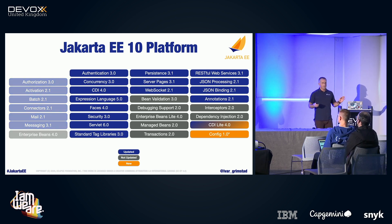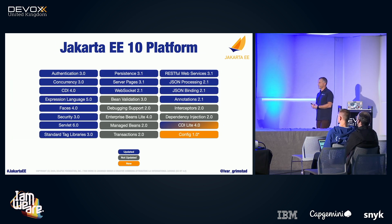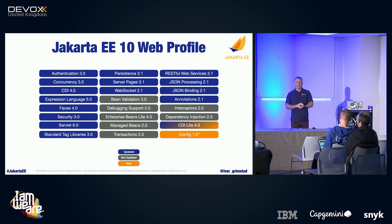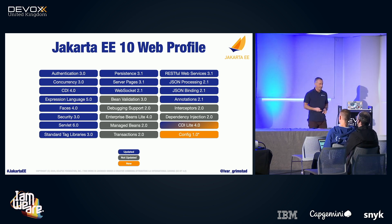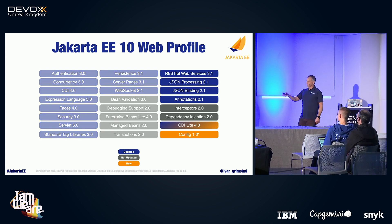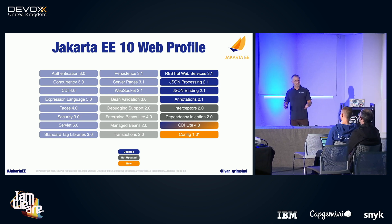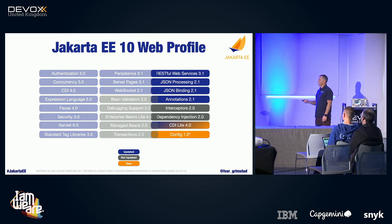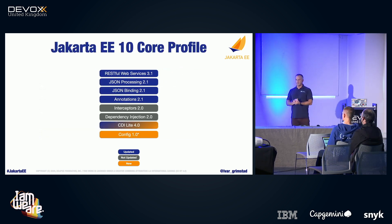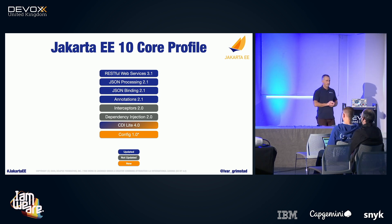If we take away the more enterprise-y specifications and focus on the remainder, that's how the Jakarta EE web profile will look — a subset of the platform. And if we then remove the web-specific specifications like JSF and Servlet, we're left with a stack of specifications suited for creating headless applications or microservices. These are the specifications planned to be part of the Jakarta EE 10 core profile.